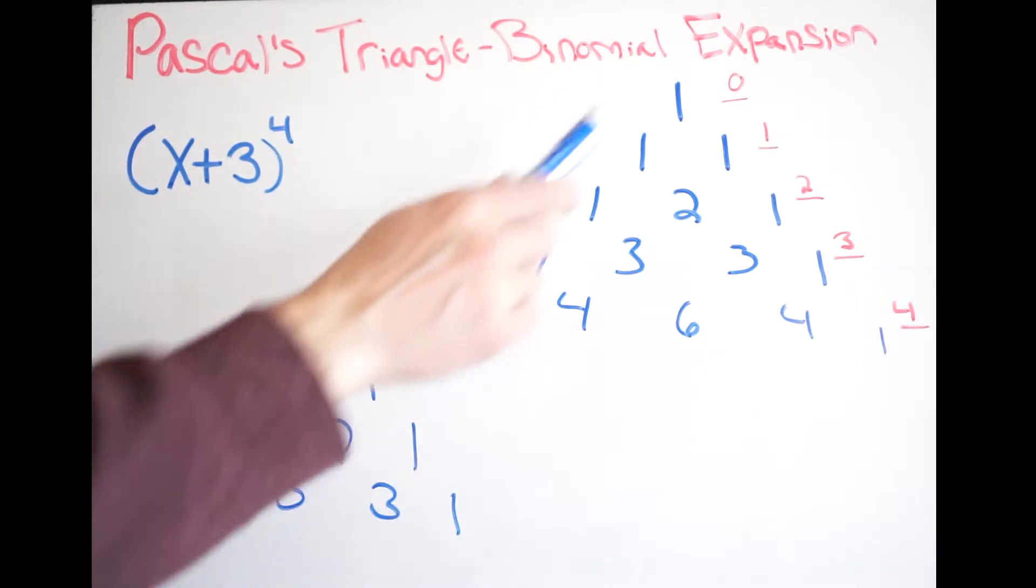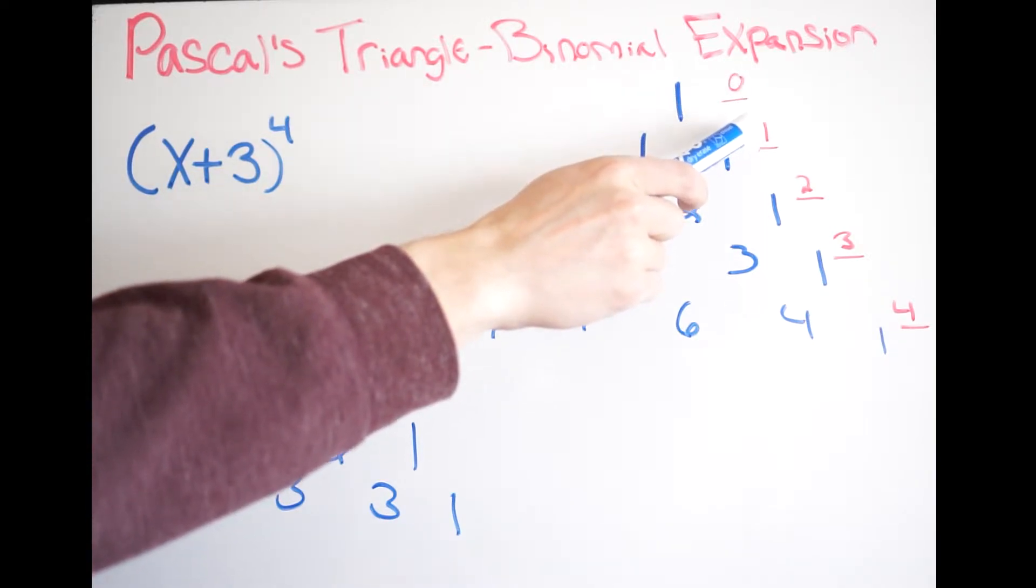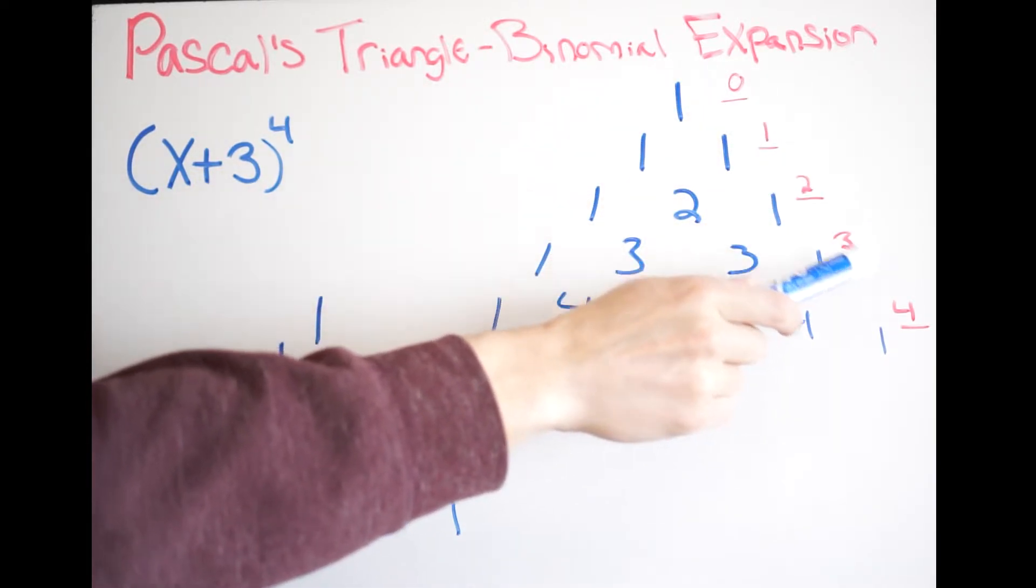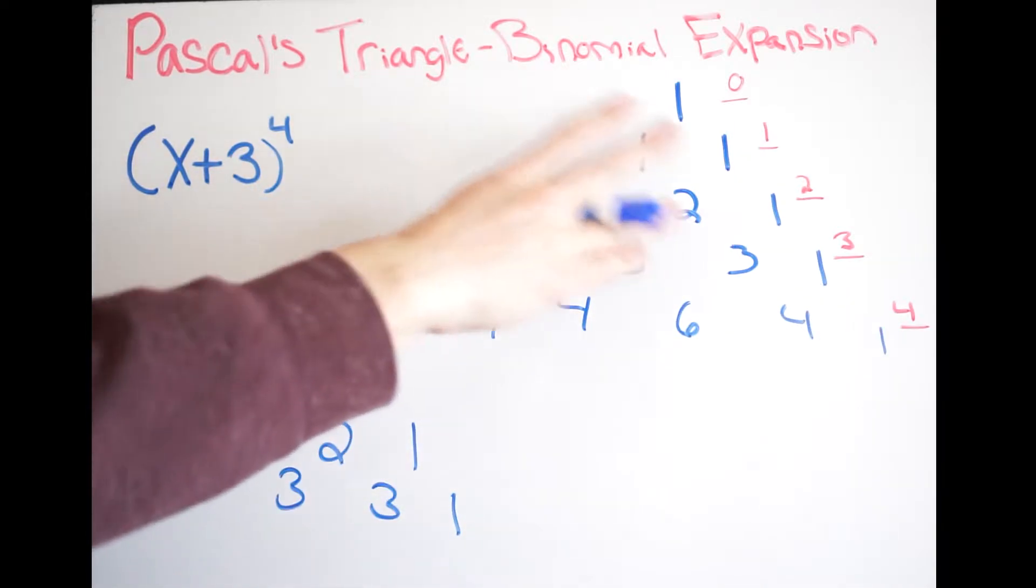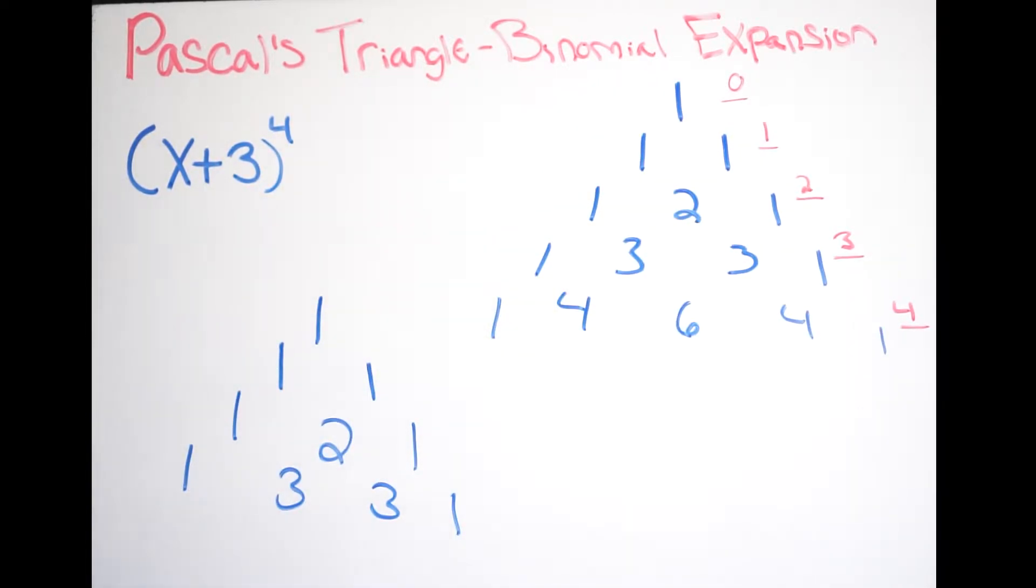Now notice here in red, this is going to be our exponent value. So we start at zero, one, two, three, and four. And these numbers are going to act as the coefficients when we expand out this binomial.